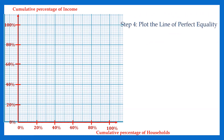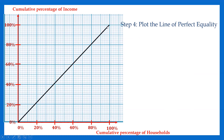The fourth step is to plot the line of perfect equality. The perfect equality line is marked from point (0,0) to point (100,100). You can create this diagonal line — it is called the line of perfect equality.